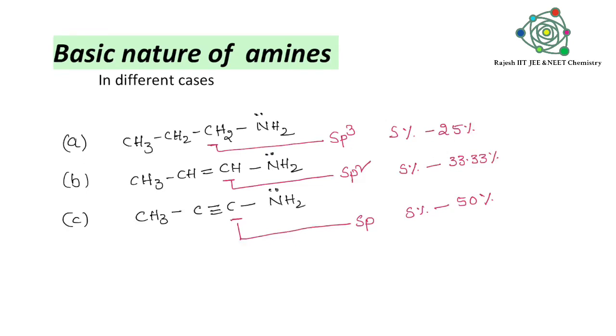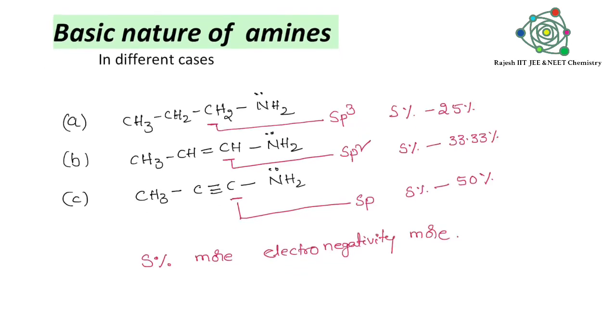Whenever s-character is increased, automatically electronegativity is more, and basic nature will be decreased. That means basic nature is less. So based on this point, we can say clearly a is greater than b, b is greater than c.